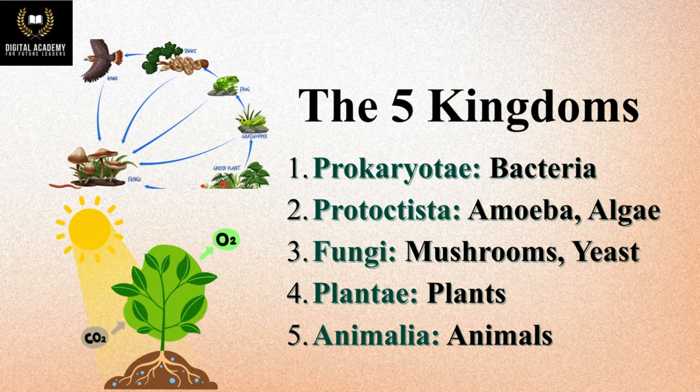The five kingdoms: 1. Prokaryota – Bacteria; 2. Protoctista – Amoeba, Algae; 3. Fungi – Mushrooms; 4. Plantae – Plants; 5. Animalia – Animals.